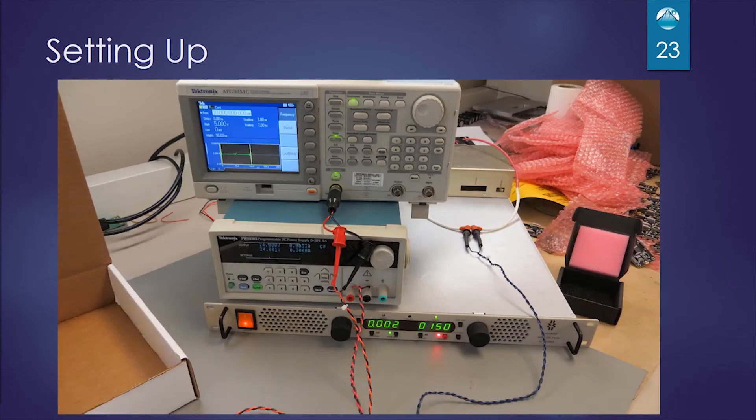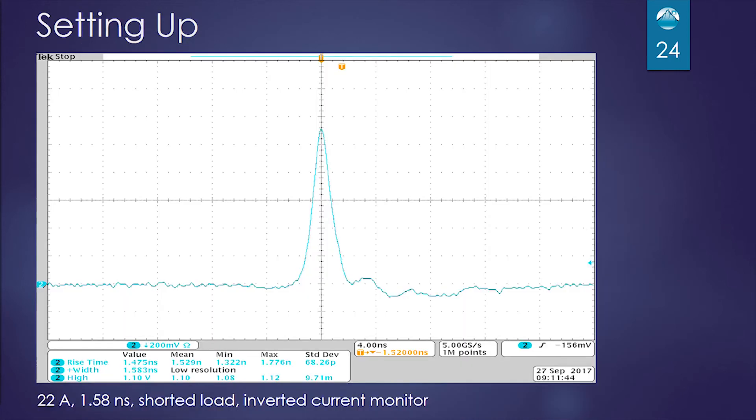Here is our entire setup up and running. You can see that the bottom supply is our high voltage, 150 volts. The housekeeping supply is at 24 volts, and we have our function generator with the trigger on. And here is the same scope shot we showed earlier. This is a 22 amp pulse or 22 amp output, and we have a little less than 1.6 nanosecond pulse into our shorted load.